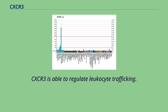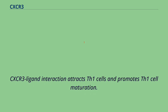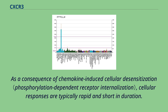CXCR3 is able to regulate leukocyte trafficking. Binding of chemokines to CXCR3 induces various cellular responses, most notably integrin activation, cytoskeletal changes, and chemotactic migration. CXCR3 ligand interaction attracts Th1 cells and promotes Th1 cell maturation. As a consequence of chemokine-induced cellular desensitization, cellular responses are typically rapid and short in duration.